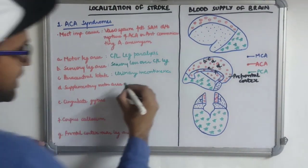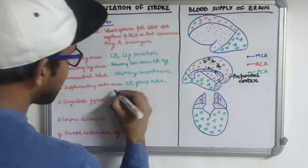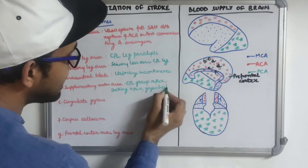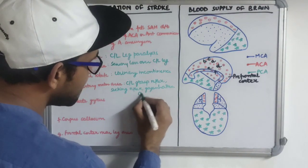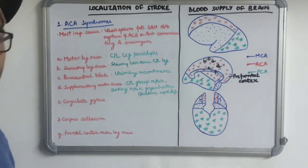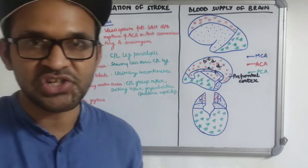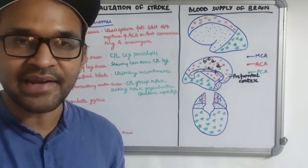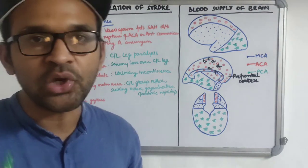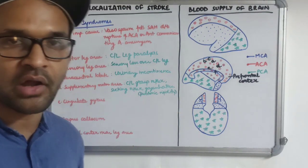Due to involvement of the supplementary motor area, primitive reflexes appear: contralateral grasp reflex, sucking reflex, and gegenhalten, also called paratonic rigidity. Gegenhalten is a type of increased tone that varies irregularly throughout the range of motion, unlike spasticity, where resistance is greatest at the start of motion. Gegenhalten affects flexors and extensors equally, unlike rigidity, and is classical of frontal lobe involvement.